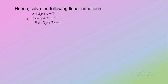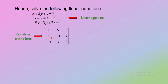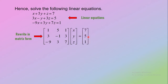Hence, solve the following system of three linear equations. To find x, y, and z, first rewrite the linear equations in matrix form. The elements of the first row are the coefficients of variables x, y, and z in the first equation. The elements of the second row are the coefficients in the second equation. The elements of the third row are the coefficients of x, y, and z in the third equation. Then write the variable matrix with elements x, y, and z equal to the constant matrix with elements 7, 5, and 1.